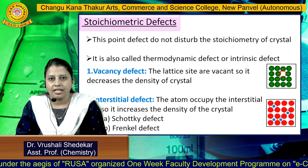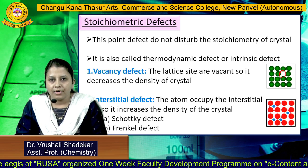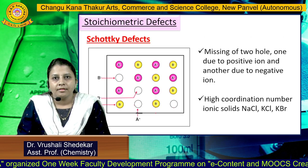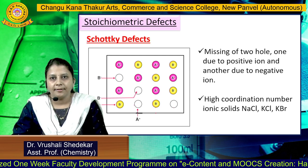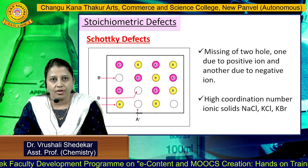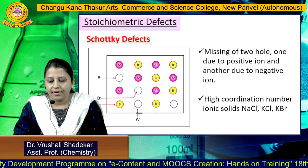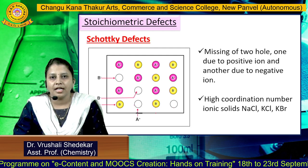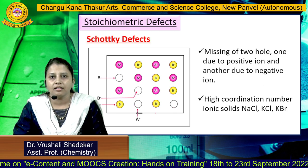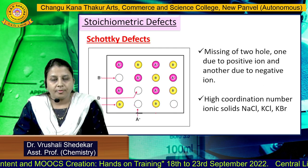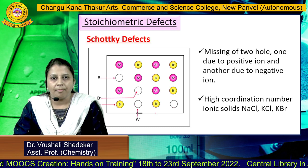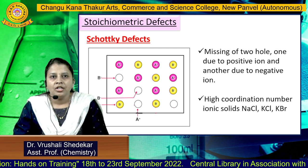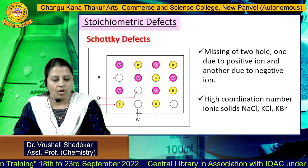Interstitial defects are again divided into two types: Schottky defect and Frenkel defect. In the Schottky defect, an equal number of positive and negative ions are missing from their lattice sites. It is observed in high coordination number compound solids such as NaCl, KCl, and KBr. It maintains the electrical neutrality of the solid.